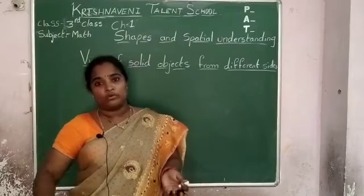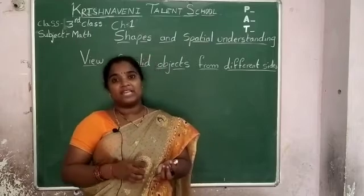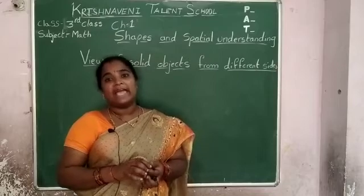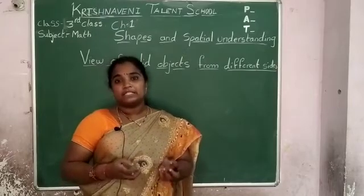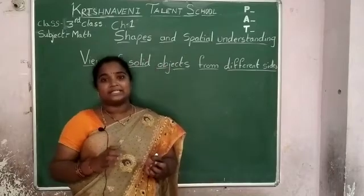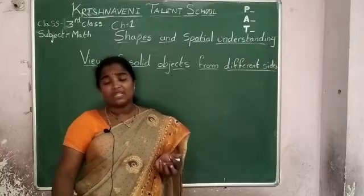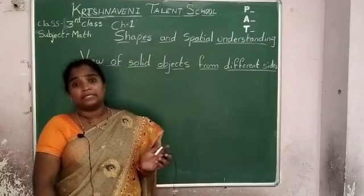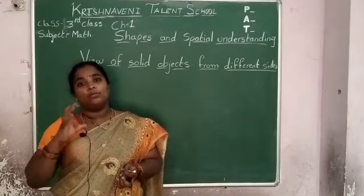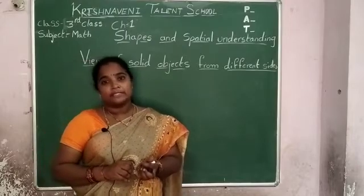Next, cone. What is a cone? A cone has two faces: one curved face and one flat face, and one edge. Next, sphere. Sphere has only curved surfaces — it does not have sides and corners. What are examples of a sphere? Ball, moon, and orange — these are all examples of a sphere.